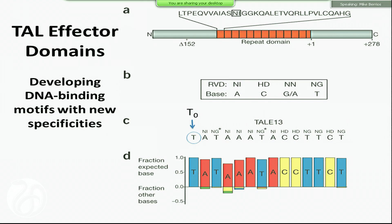TALENs are proteins that bind to DNA and have repeats. There are two amino acids in every one of these repeats that, depending on which combination, will bind to a different base in the DNA — A, C, G, or T. By playing with these repeats and putting the right combination, you can make this protein bind to any sequence you want. So basically you have a protein that binds a specific sequence of DNA.